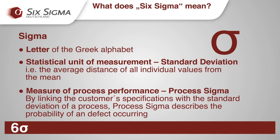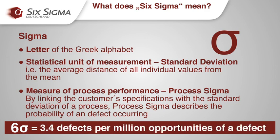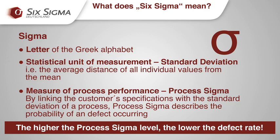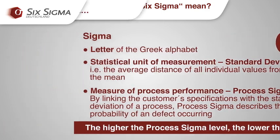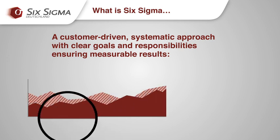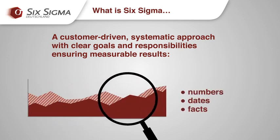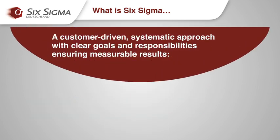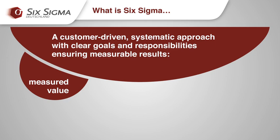A Sigma value of six means that a process is working nearly defect-free with a failure rate of only 3.4 defects per million defect opportunities. The Sigma level of a process therefore describes the probability of a defect occurring with regard to customer expectations, by comparing the process variation in the form of the standard deviation with the tolerance or specification limits of the customer. Six Sigma is a measurement value which indicates the probability of a defect occurring in a process.